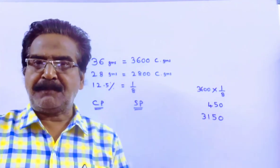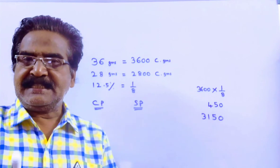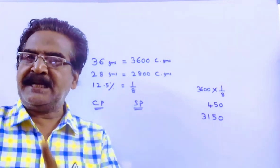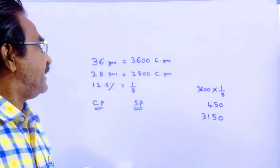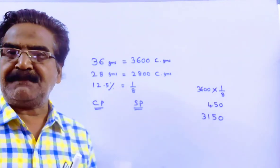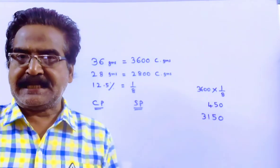Friends, problem is given in the description box. A dishonest merchant sells his goods at 12.5% loss and uses a weight of 28 grams instead of 36 grams. Then what is the profit percent?